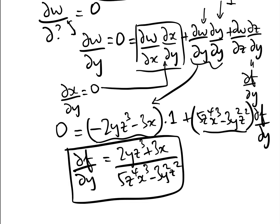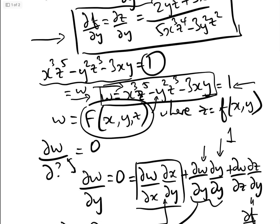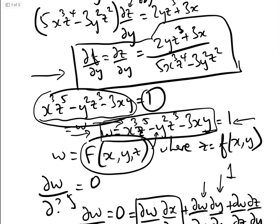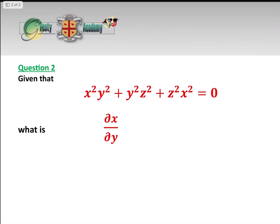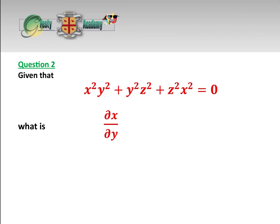Both methods give exactly the same answer. Personally I prefer the chain rule method where we define the expression as a function equal to a constant, because the differentiation is a little easier. Now for question two — this one does not tell us which variables are independent and dependent; all three x, y, and z are present.